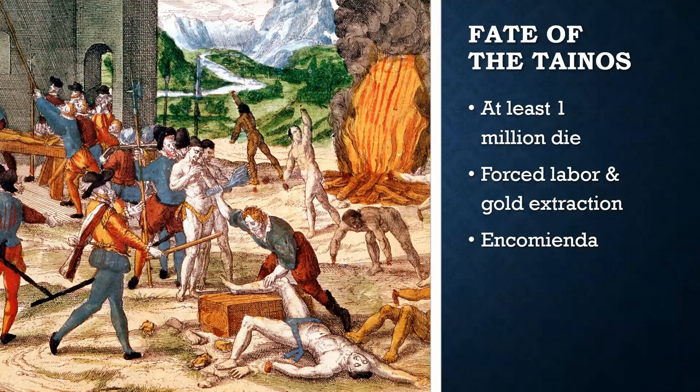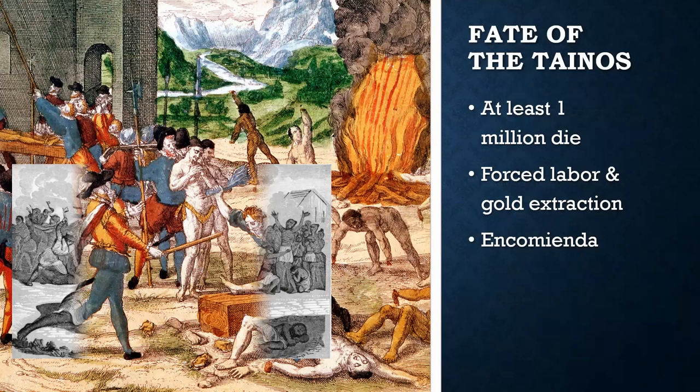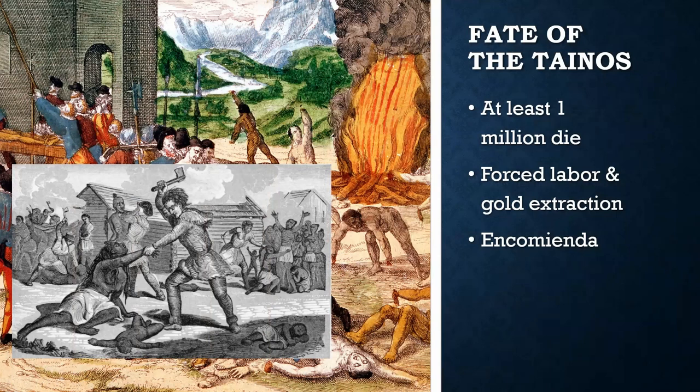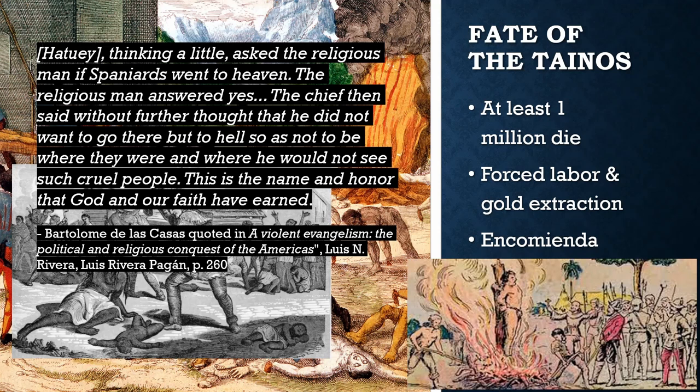The system used to administer and exploit native labor was the encomienda system, which I will return to in another video. The Tainos not only died from overwork and abuse, but were also ravaged by diseases like smallpox brought by the European colonizers. The Tainos were not simply complacent to these abuses — many, such as the Taino leader Jatue, did fight back. However, Jatue was ultimately defeated, captured, and executed. According to Bartolome de las Casas, after refusing to convert to Catholicism, Jatue was burned alive.